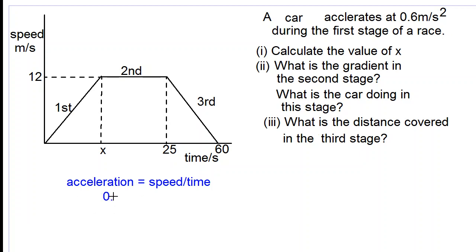So 0.6 equals 12 over x. Therefore x equals 12 over 0.6, which equals 20 seconds. Remember that x represents time in seconds. This is the answer for part one.